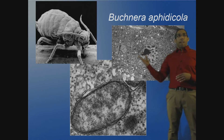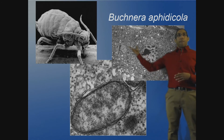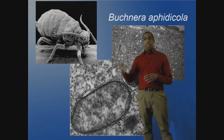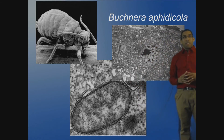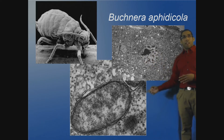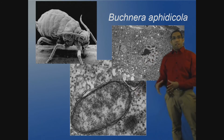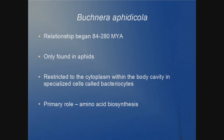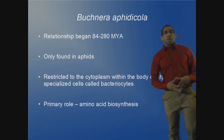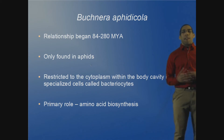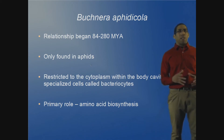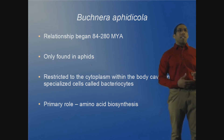Here are a few pictures of Bucknera. At the top is an image of an aphid, which is its primary host. To the side is Wolbachia within the large vacuole of a host cell. Bucknera's relationship with its primary host, aphids, first started around 84 to 280 million years ago. It is only found in aphids, and its primary role is in amino acid biosynthesis, as I'll show in the next slide.